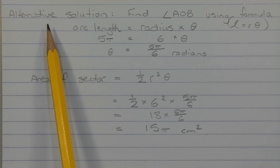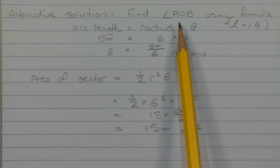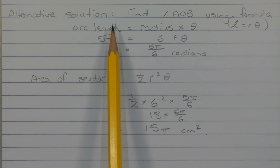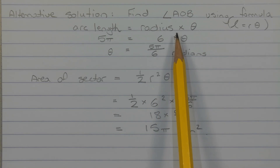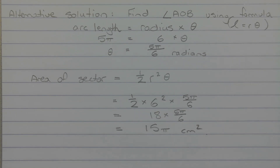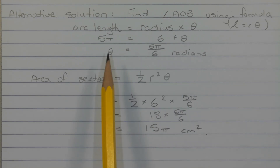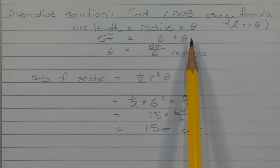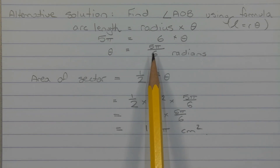An alternative solution is to find angle AOB using the formula arc length equals radius times theta, where theta is the angle in the sector in radians. That is the formula L equals R theta, where L represents the arc length and R represents the radius. So in this case the arc length is 5 pi and the radius is 6, giving 5 pi equals 6 times theta. Rearranging, theta equals 5 pi over 6 radians.